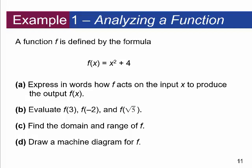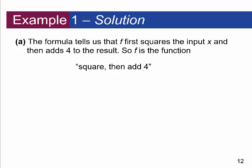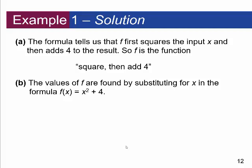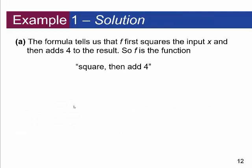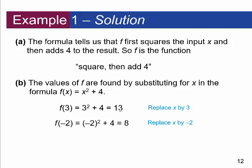Part A: the formula tells us that F first squares the input X and then adds 4 to the result — so F is the function: square the input, then add 4. The values of F are found by substituting into F of X equals X squared plus 4. F of 3: 3 squared plus 4 gives 13. F of negative 2: negative 2 squared is positive 4, plus 4 gives 8. F of the square root of 5: the square root of 5 squared is 5, plus 4 gives 9.